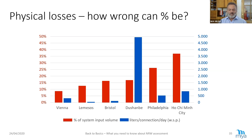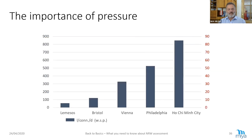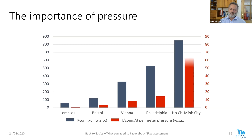Philadelphia and Ho Chi Minh City — there is not much difference when looking at liters per connection per day. The problem is we still haven't taken pressure into account. Now, liters per connection per day per meter pressure — we simply divide these values by the average pressure — and only now we get the full picture. Ho Chi Minh City is of course a much leakier system than Philadelphia.